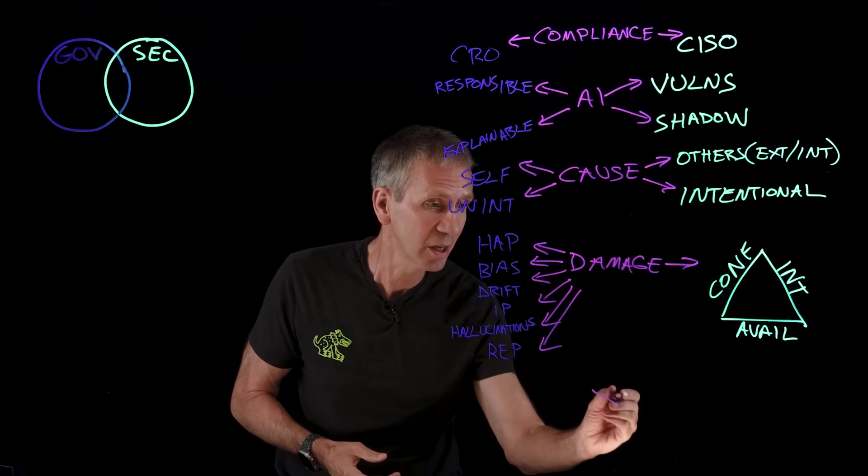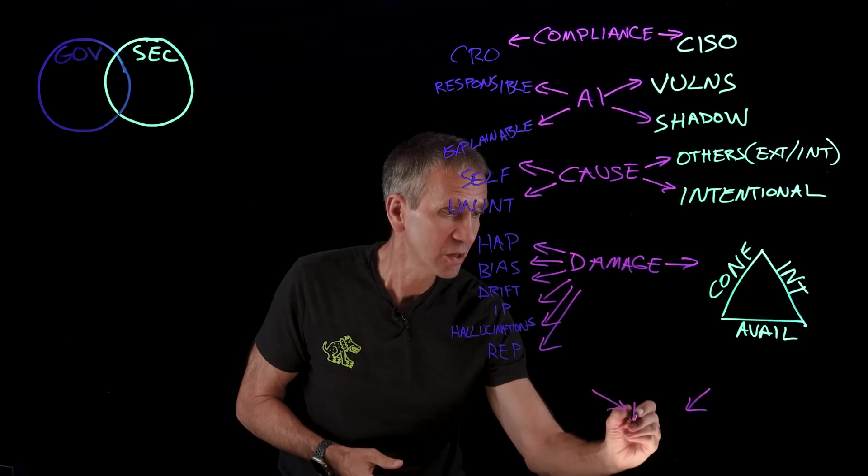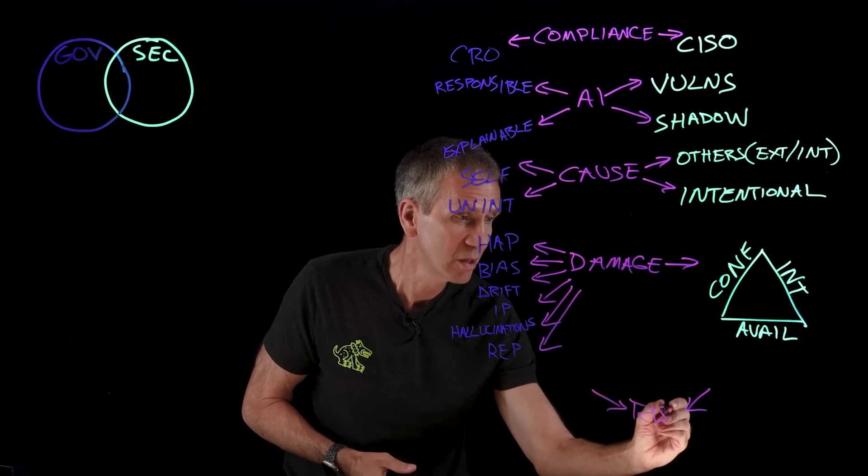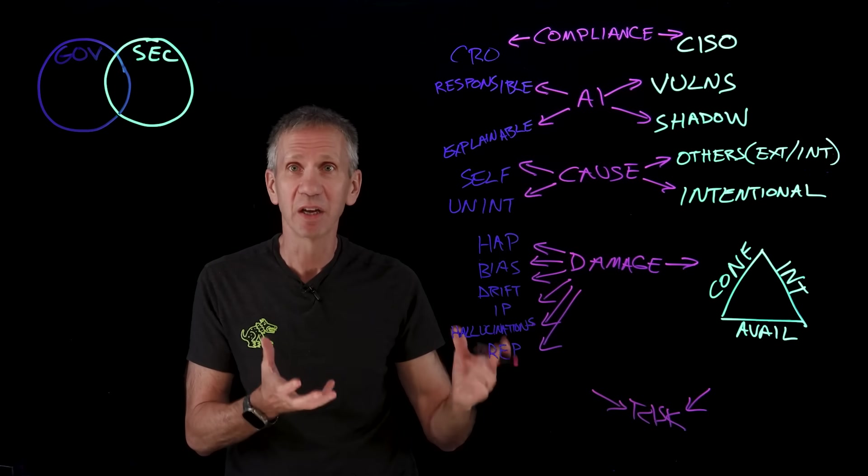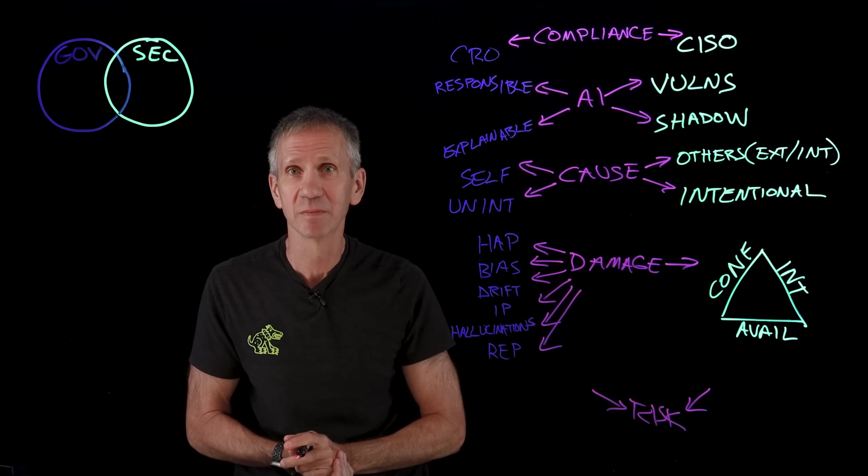All of these things ultimately then feed into this idea of risk. Different kinds of risk and different kinds of policies related, but it's all about AI risk. So now we've taken a look at those risks, let's take a look at what we need to do about them.